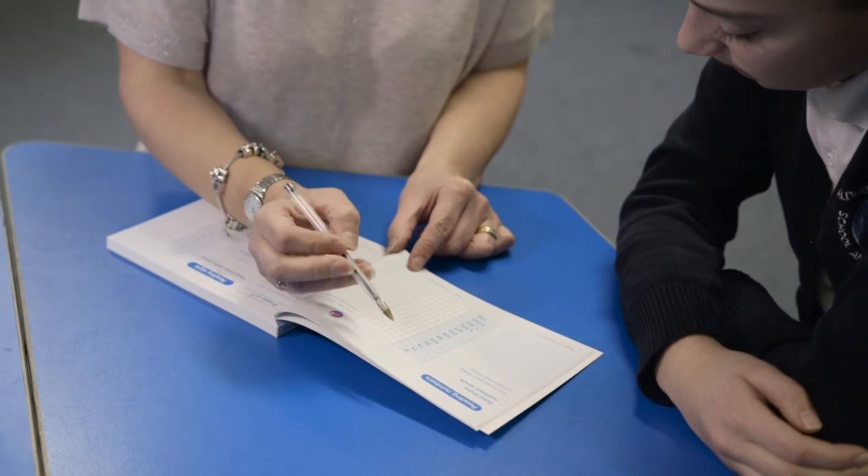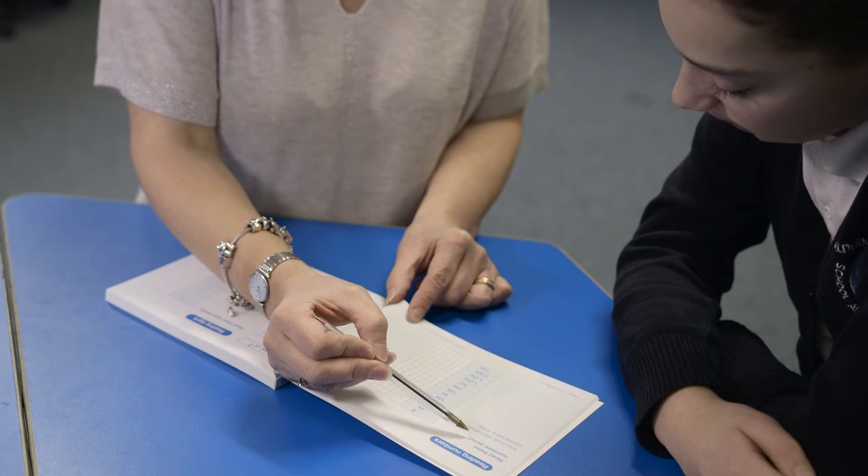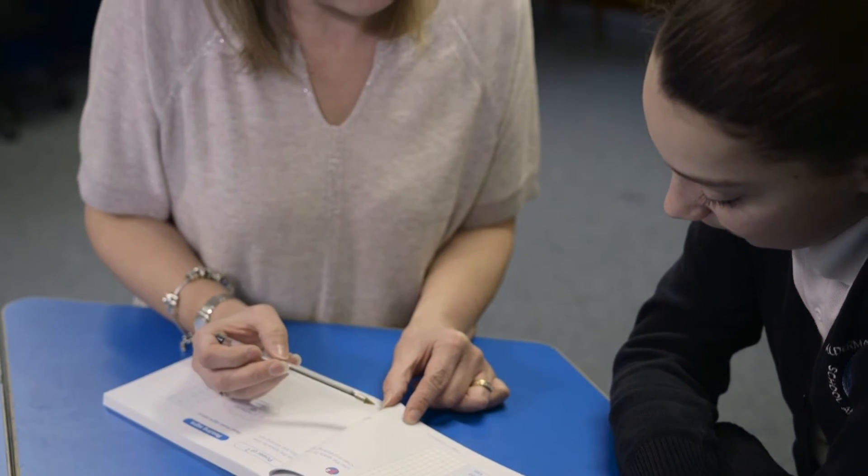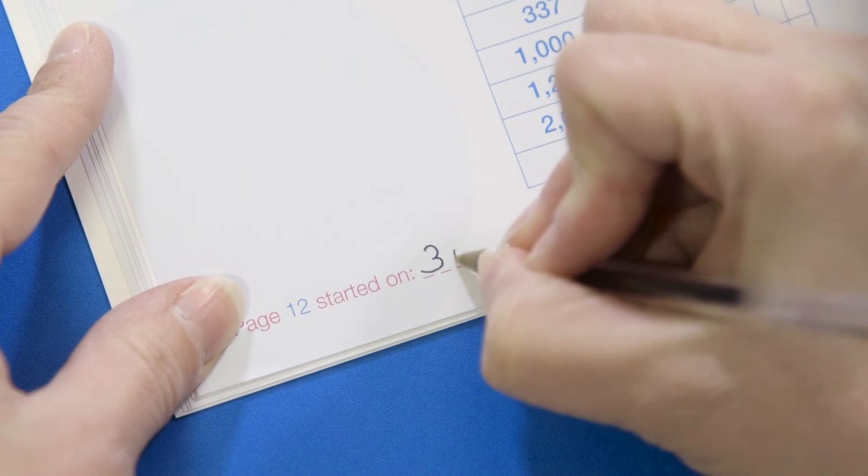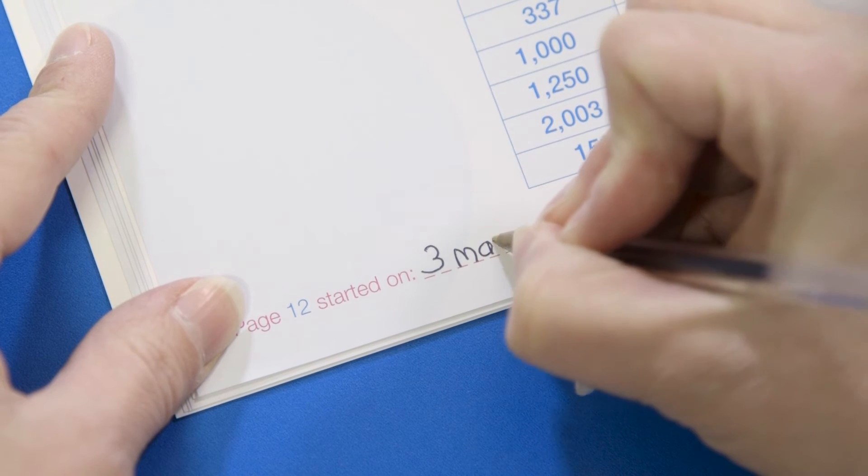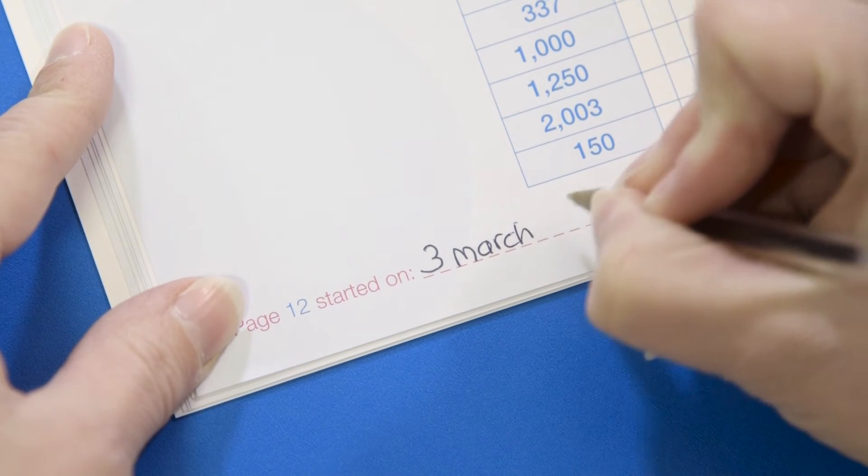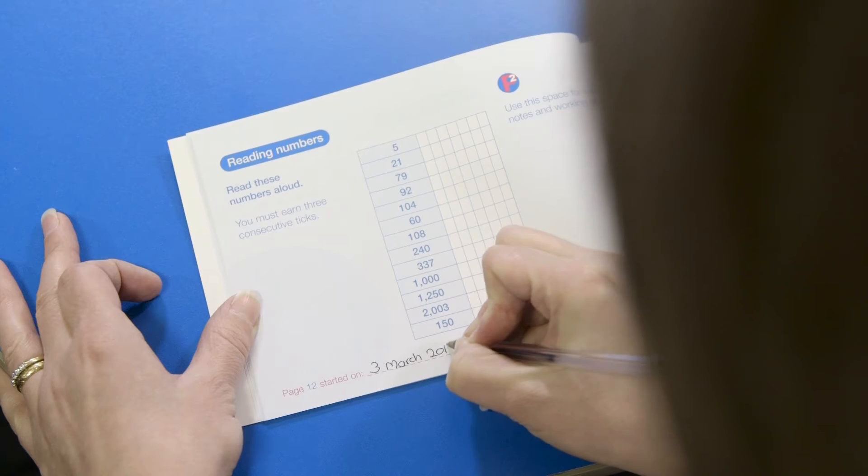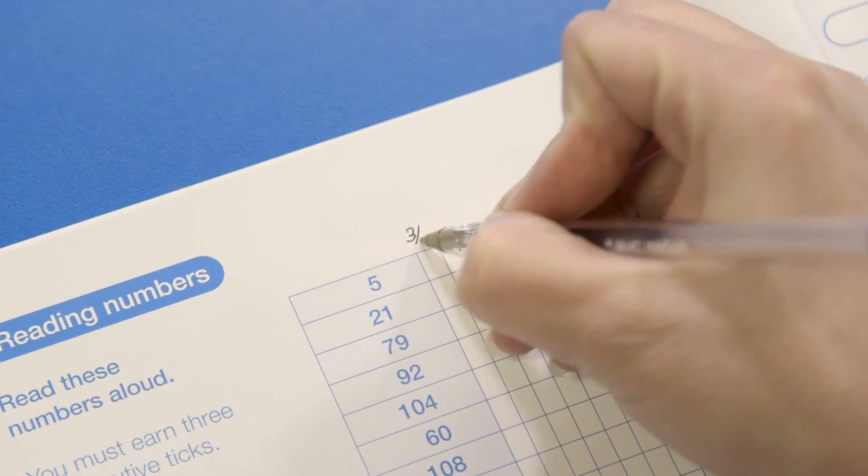Each page has a script which can be read by yourself or the student. This should be read out loud. Date each page when you start. And you can also put the date at the top of each column.